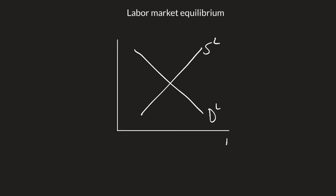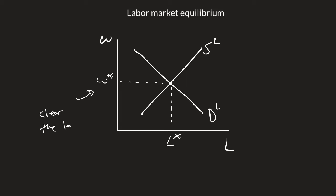What this classical model tells us — remember we're looking at the relationship between the real wage and the labor hours worked — is there is a single wage, we call this W star, that clears the market.